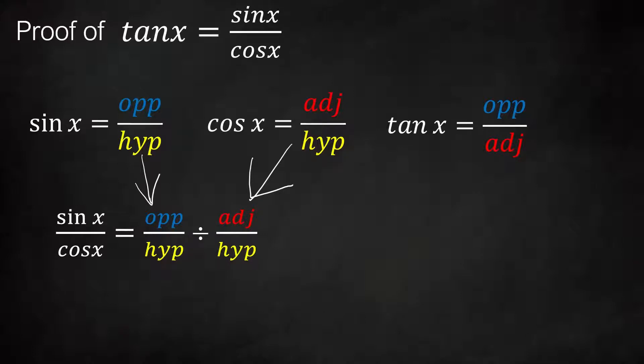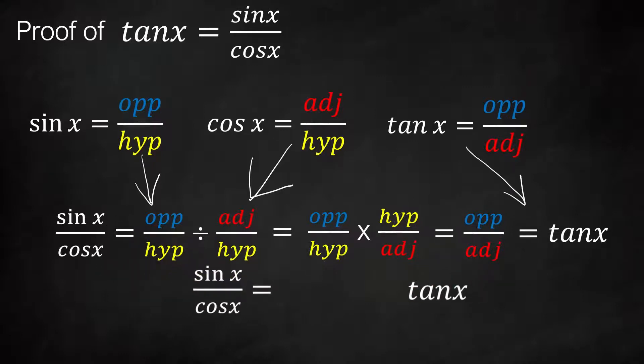If we remember that to divide by a fraction we flip it and times it, we see there's now a hypotenuse on the top and bottom of the combined fraction, so we can cancel them. That leaves us with the opposite over adjacent, which is just tan x. So sine x over cos x is just tan x, which is the identity we're trying to prove.